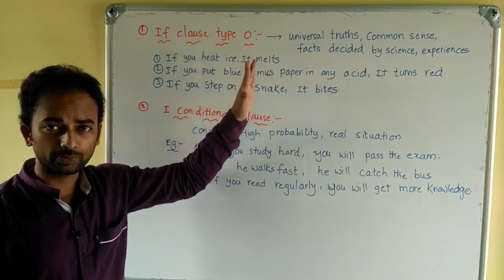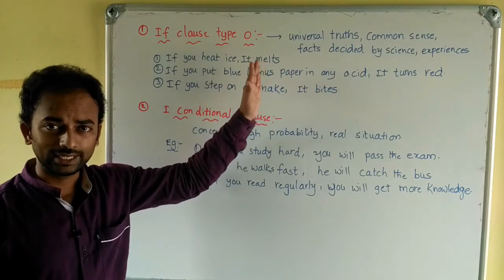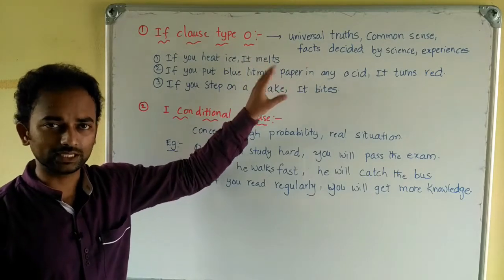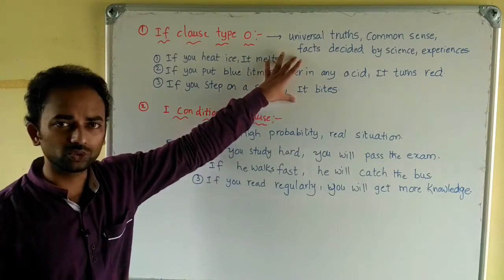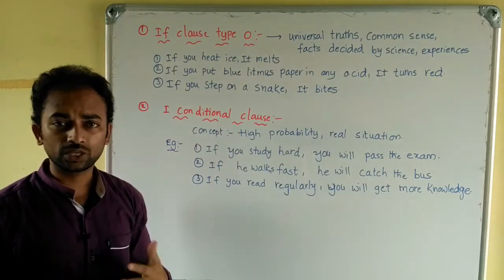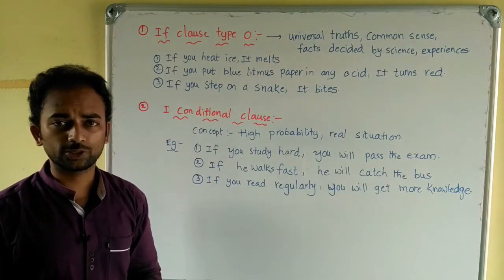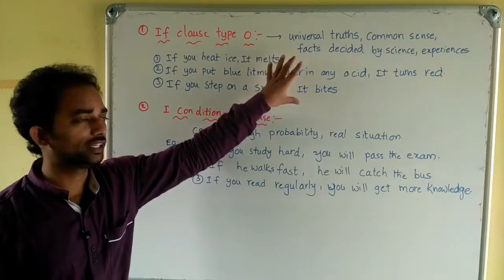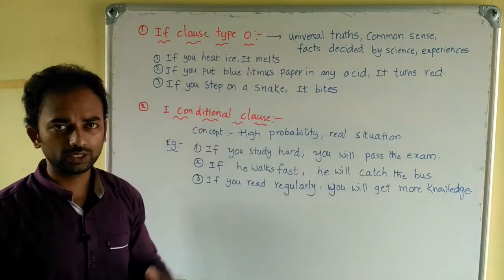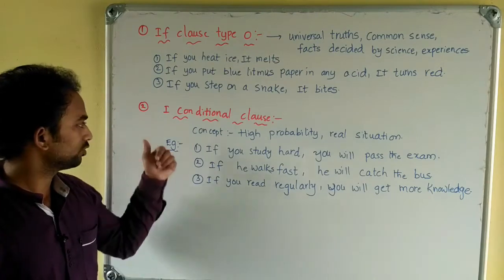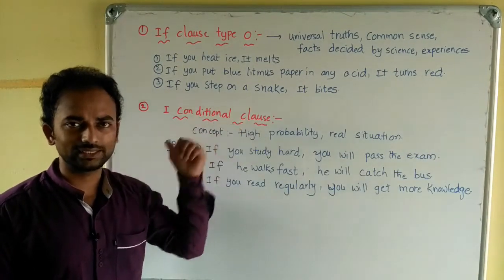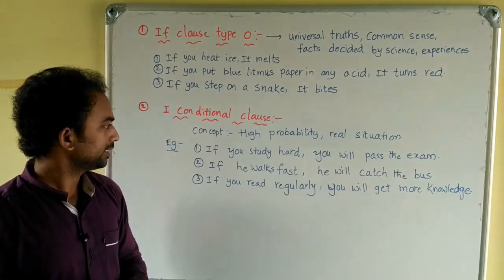Type 0 does not talk about probability — it talks about certainty. Next is the first conditional sentence, also called the first conditional clause.